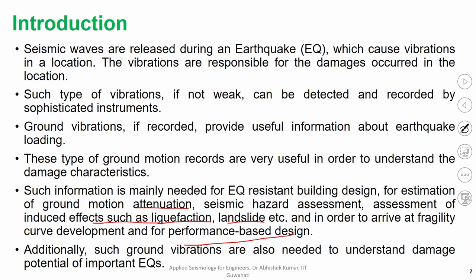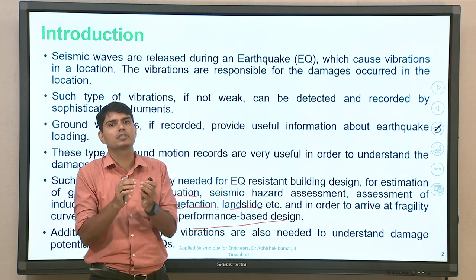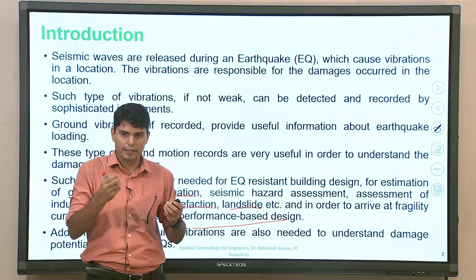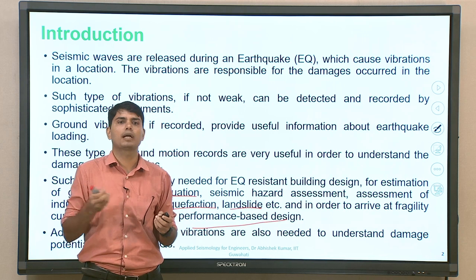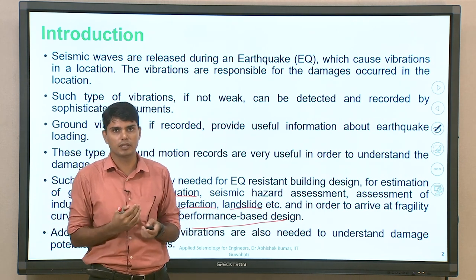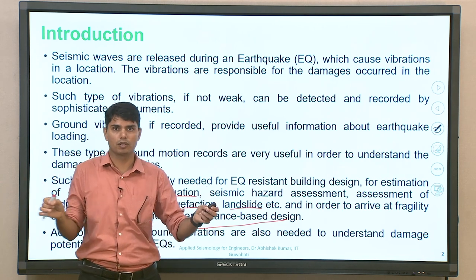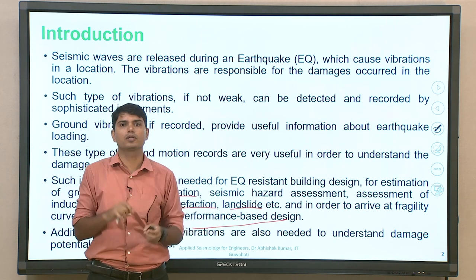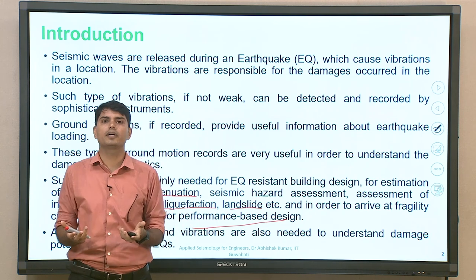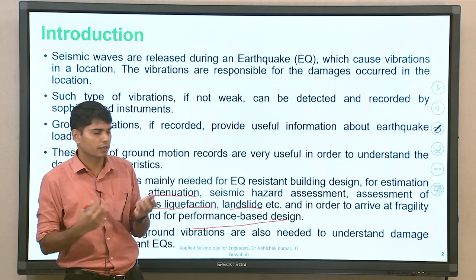We will not rely on one particular ground motion to find out whether a building will undergo damage or not, because there are many parameters which can control ground motion and depending upon those parameters the performance of the building may change. So we have to take a larger set of ground motion records. If recorded ground motion is not available, we definitely have to go with simulated ground motion.